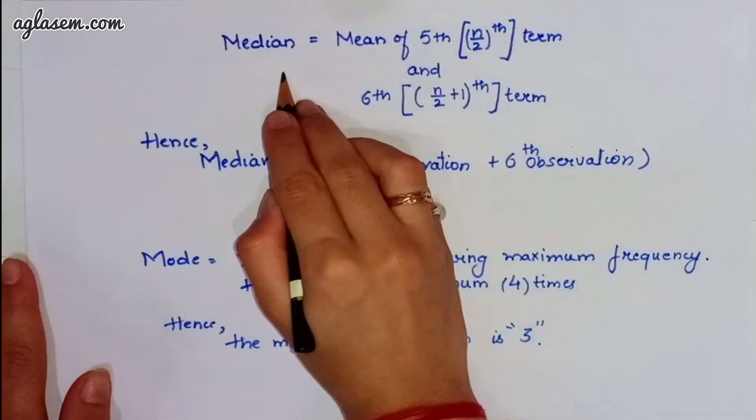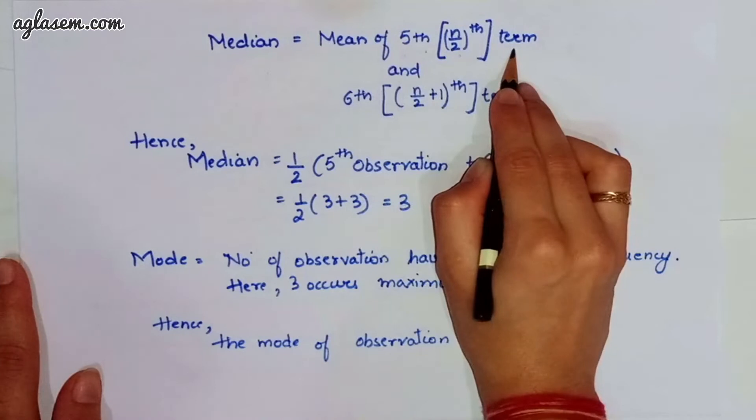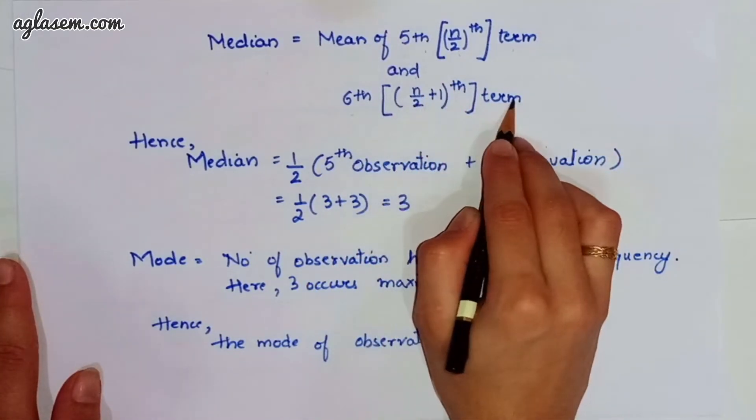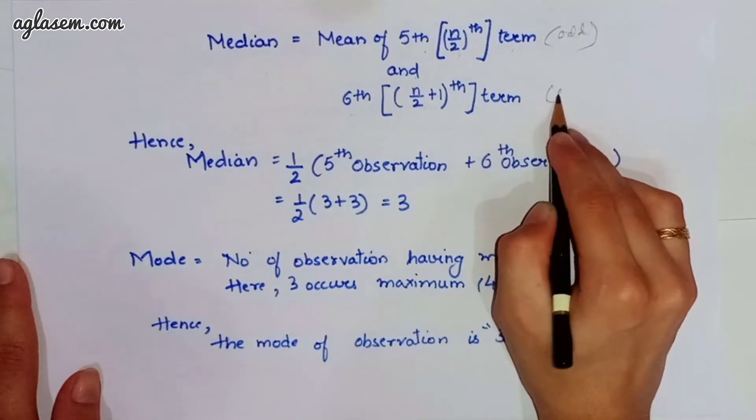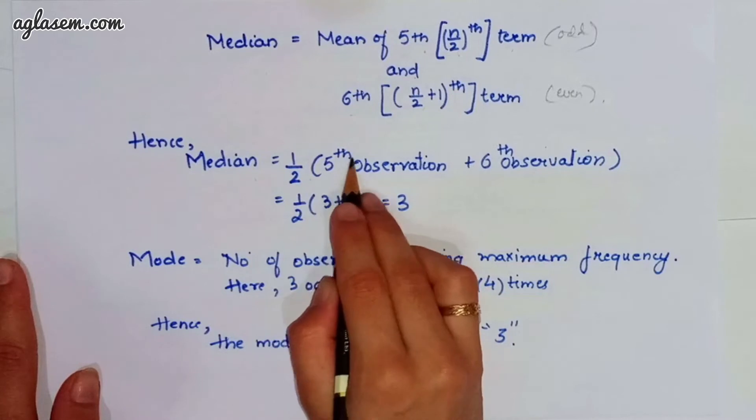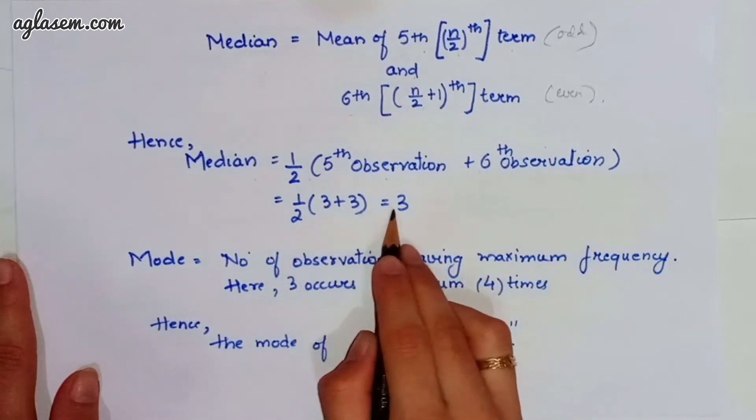Further, the median we can find it as mean of 5th, n by 2 term, and 6th, that is n by 2 plus 1 term. This is odd formula and this is even formula. Further, median, that is 1 by 2, 5th observation plus 6th observation, which will give you half, 3 plus 3, that is 3.